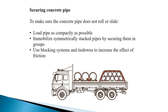Securing Concrete Pipe. To make sure the concrete pipe does not roll or slide, load pipe as compactly as possible. Immobilize symmetrically stacked pipes by securing them in groups. Use blocking systems and tie-downs to increase the effect of friction.